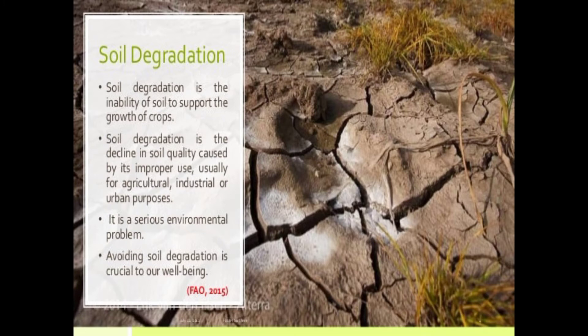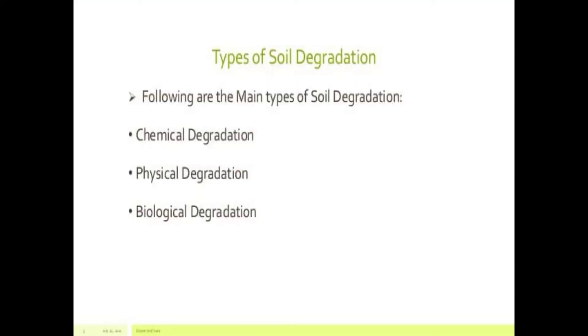What is meant by soil degradation? Soil degradation is the inability of soil to support the growth of crops. It is the decline in soil quality caused by its improper use, usually for agriculture, industrial, and urban purposes. It is a serious environmental problem, and avoiding soil degradation is crucial to our well-being.